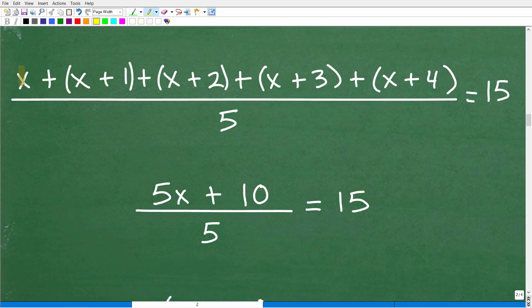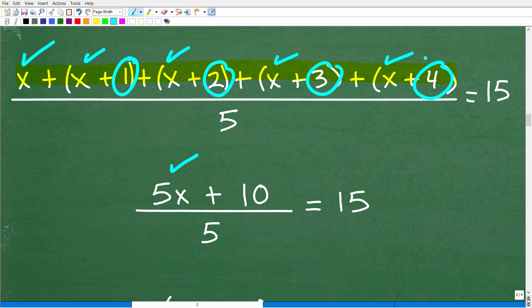Well, first things first. We need to simplify this numerator. It looks pretty scary here, but we have a lot of like terms. We have a bunch of X's and a bunch of numbers. So how many X's do we have? We have one, two, three, four, five. So that is five X's. So X plus X plus X plus X plus X is five X. And then, of course, we have one, two, three, and four. That's going to add up to 10. That's three. And we got three and three. That's six. And then six and four is 10. So we have five X plus 10 over five is equal to 15.